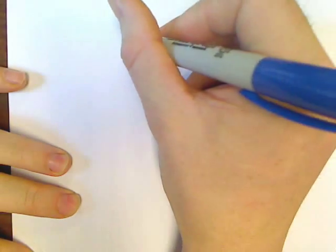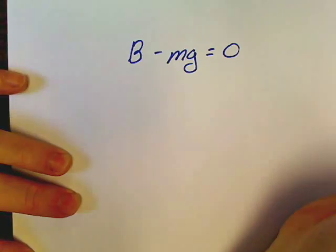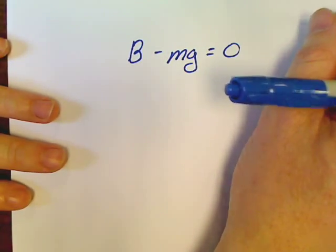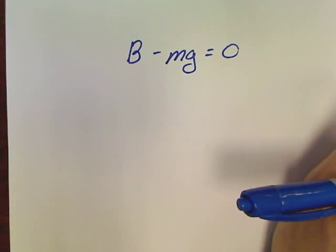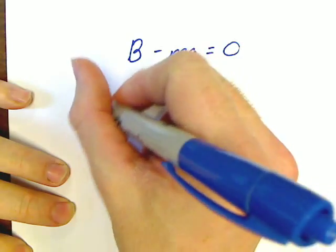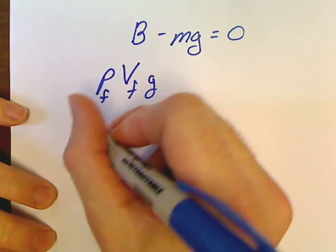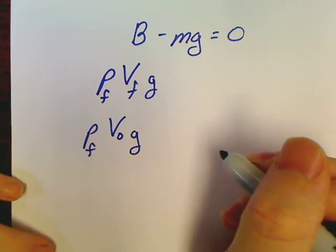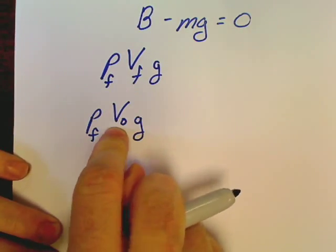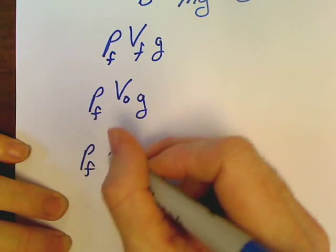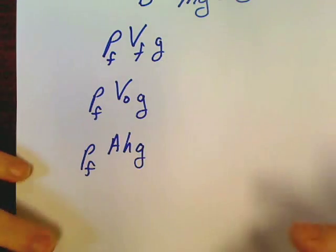A last rundown and review of all things buoyancy in 30 seconds or less. Sometimes you can work the problem just by using B minus mg equals 0. If something else stands on it, minus mg, minus mg. B itself is nothing but rho_F V_F g. If something is fully underwater, change that V_F to V_O. And if something is only partially submerged in the water, change that V_O to an A H. There. End of story.